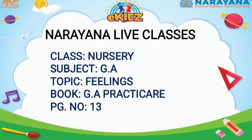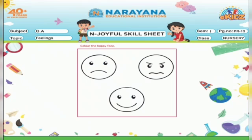And the topic is feelings. Now children, open your general awareness practicum, page number 13. You can see there are three faces. You have to identify and color them with crayon color.